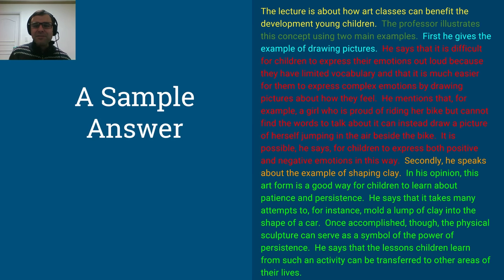He says that it is difficult for children to express their emotions out loud because they have limited vocabulary. And that is much easier for them to express complex emotions by drawing pictures about how they feel. He mentions that, for example, a girl who is proud of riding her bike, but cannot find the words to talk about it, but can instead draw a picture of herself jumping in the air beside the bike. It is possible, he says, for children to express both positive and negative emotions in this way.